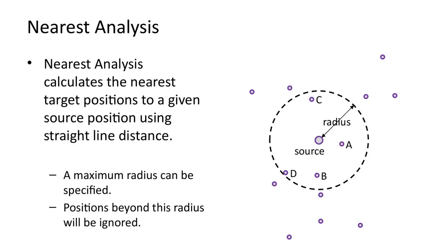In many systems, nearest functions may be available for calculating proximity for multiple positions at the same time. For large numbers of points, these functions can be significantly faster than calculating distances one by one. The nearest function typically has two additional arguments: the radius and the maximum number of positions to return.